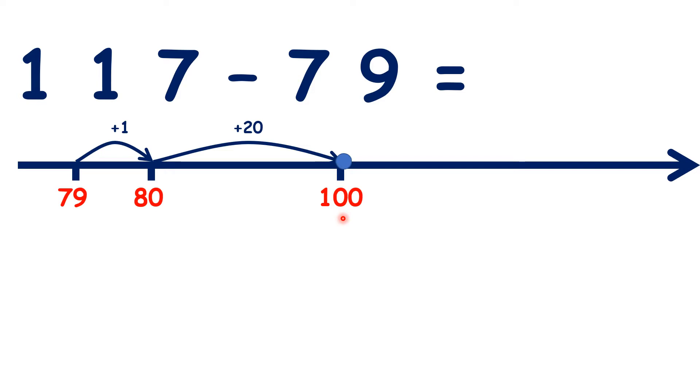And now what do we need to add to 100 to get 117? This one is easy, 100 plus 17 is 117. So now we need to add 1, 20 and 17 to get our answer.